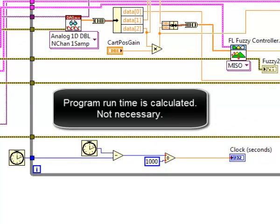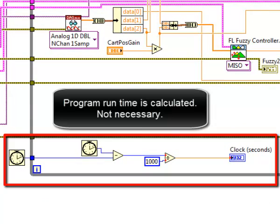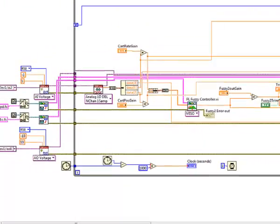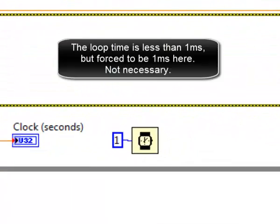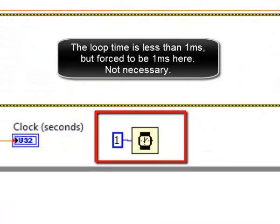Program run time is calculated, although not necessary. The loop time is less than one millisecond, but forced to be one millisecond here.